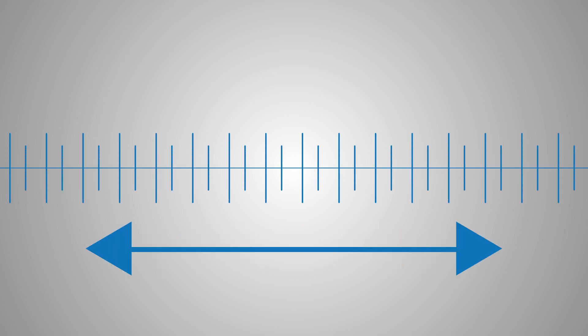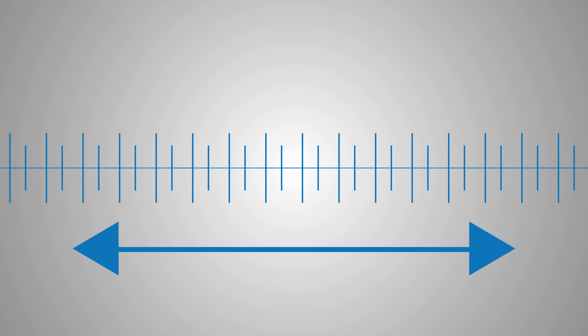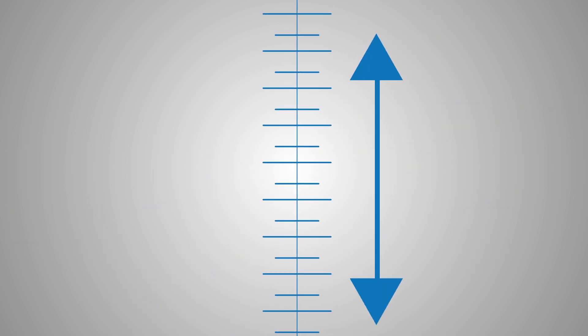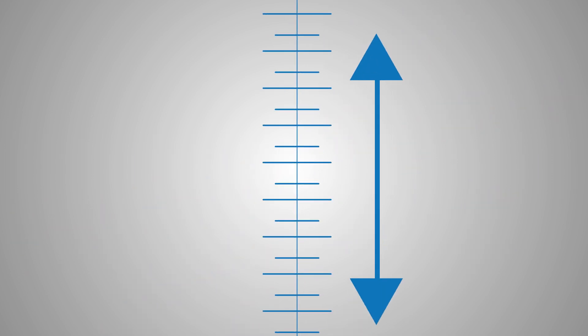Timelines can look many different ways. They usually run from left to right, or horizontally, and some run top to bottom, or vertically. We'll be reading a vertical timeline today. Let's take a look.